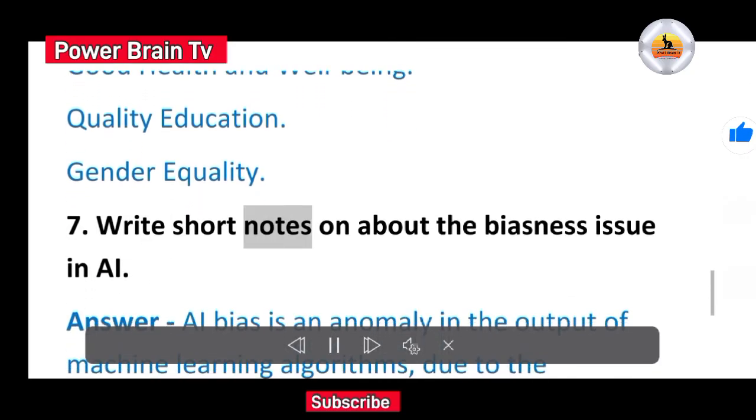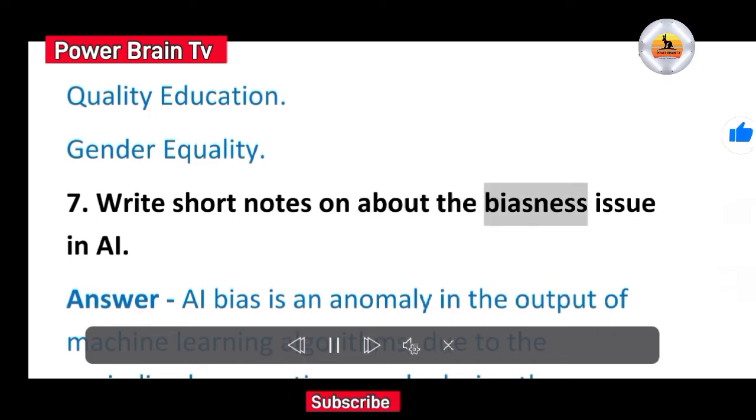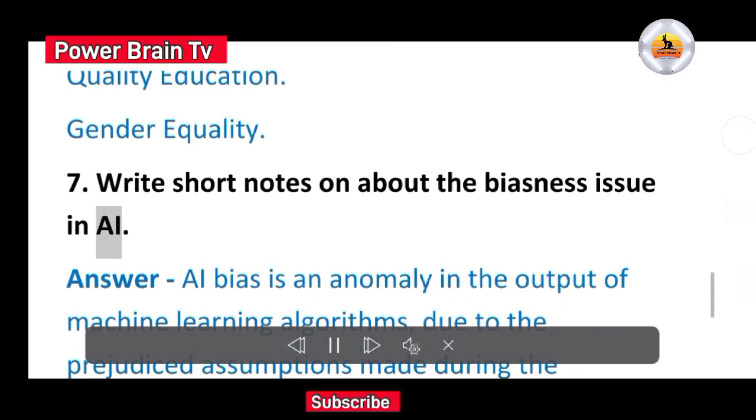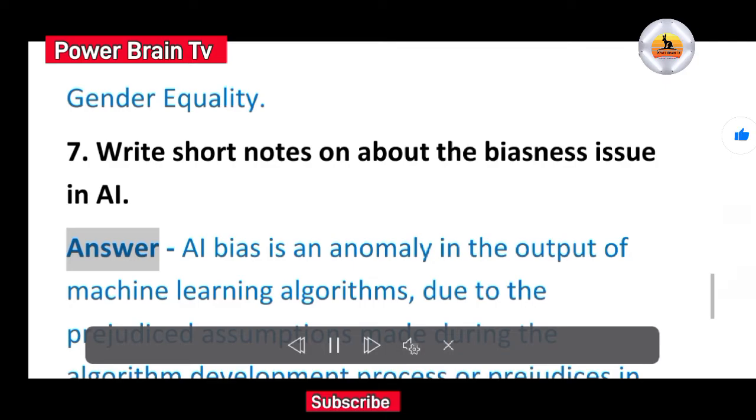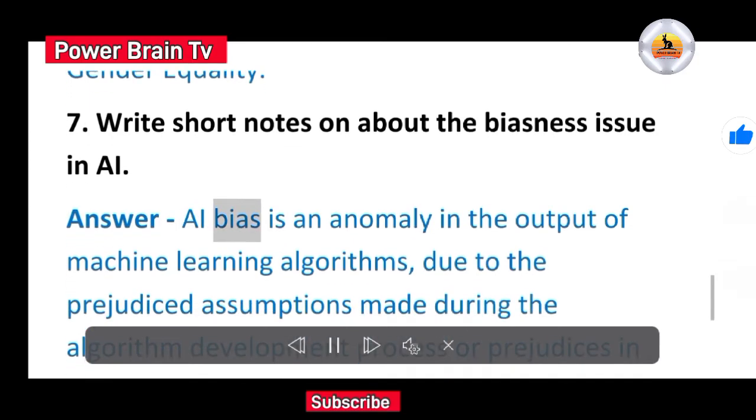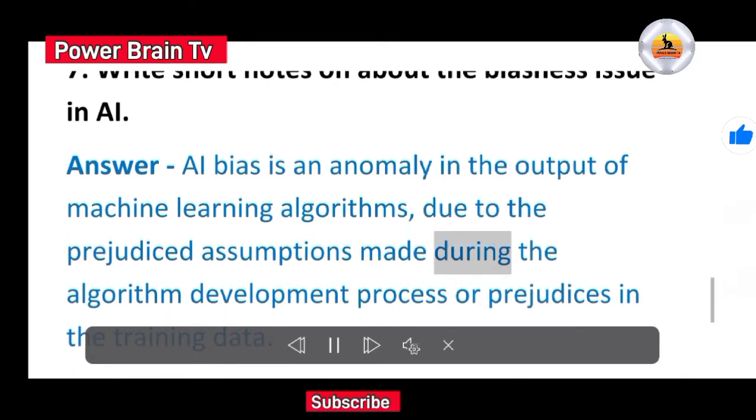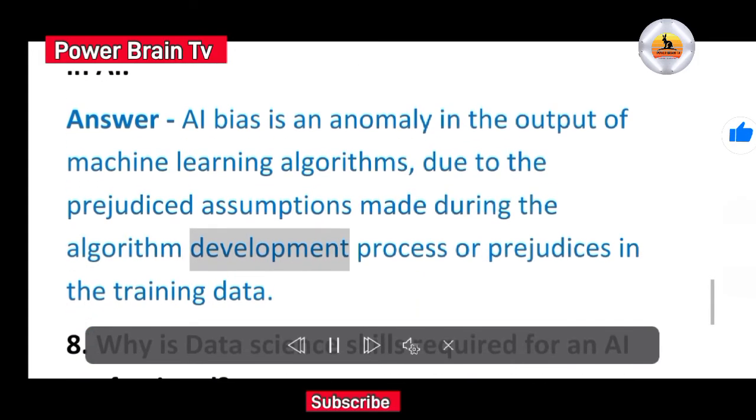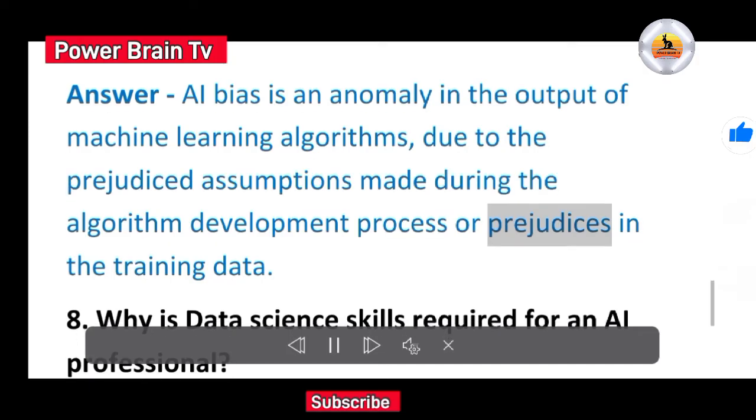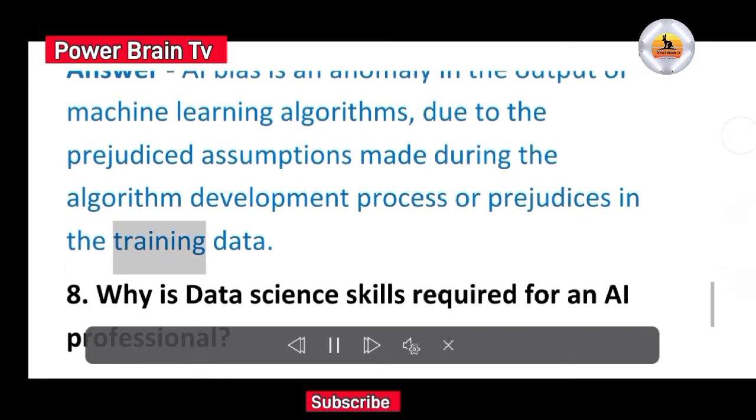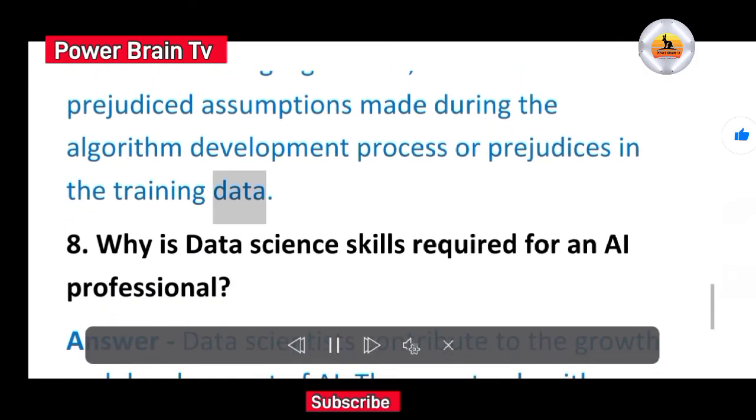7. Write short notes on about the business issue in AI. Answer. AI bias is an anomaly in the output of machine learning algorithms, due to the prejudiced assumptions made during the algorithm development process or prejudices in the training data.